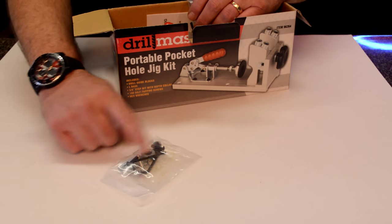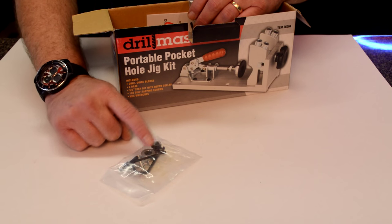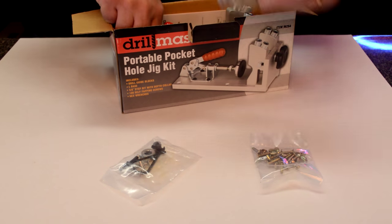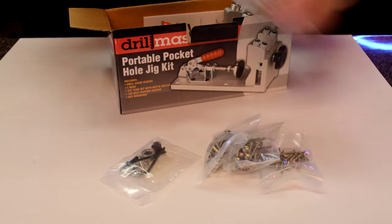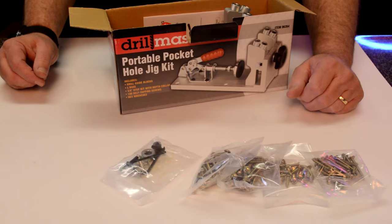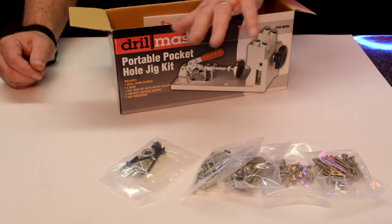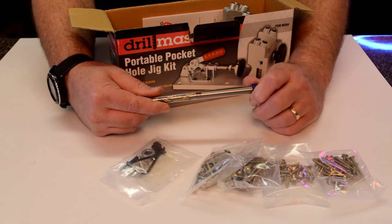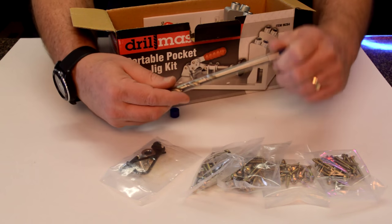Here's a bag of some hardware like mounting screws, Allen wrenches, and a collar there. And they give you a hundred screws to get you started of various sizes. This is the bit that you'll be using. It's a special bit for pocket holes.